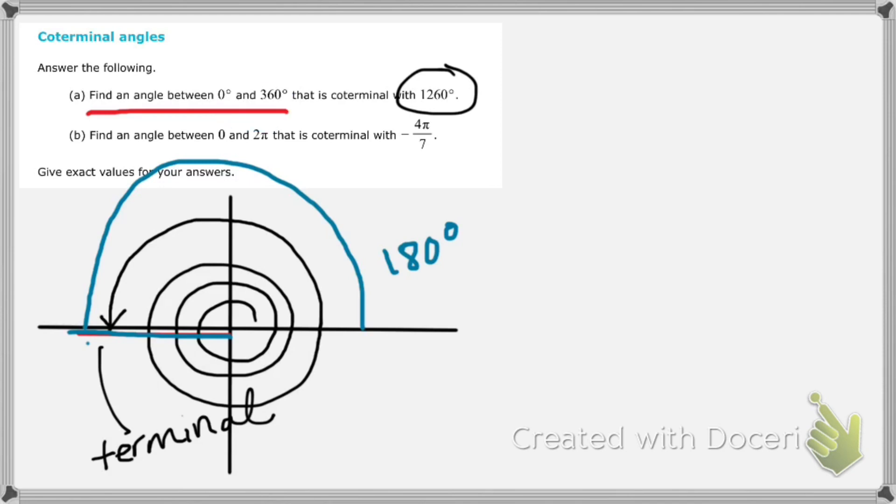So that's one way to think about this problem, just think about it visually. Another way you could always think about this problem is to start with the 1260 degrees and subtract 360 degrees n times. Just keep subtracting 360 until you get to an angle that is between 0 and 360. That's the stipulation.